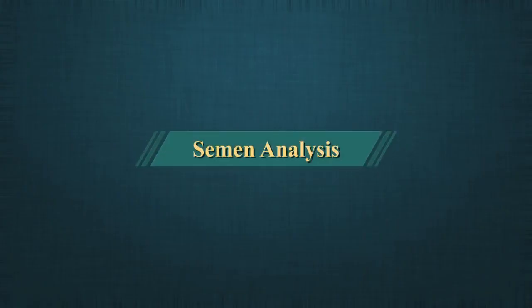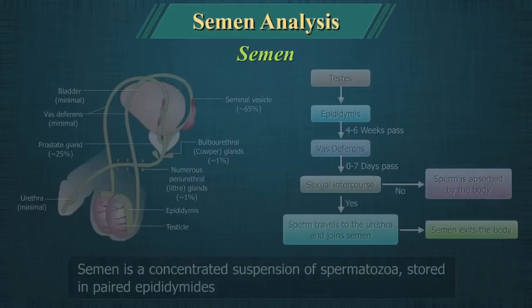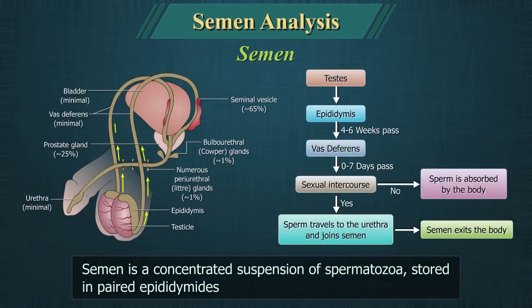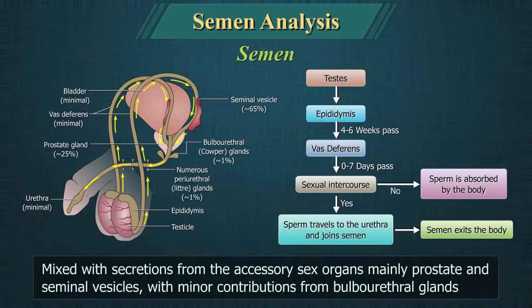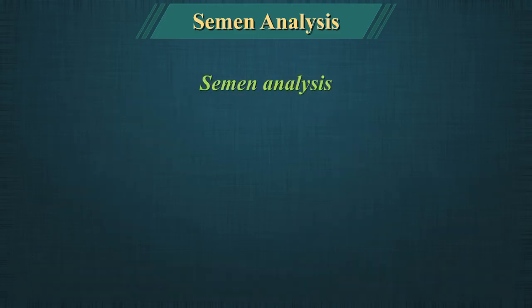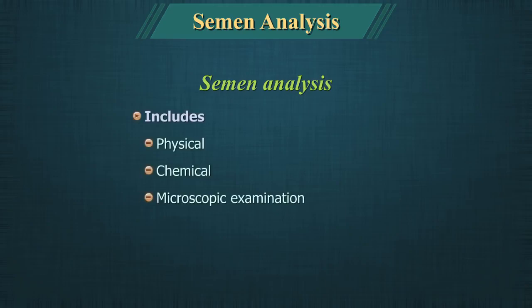Semen Analysis. Semen is a concentrated suspension of spermatozoa produced in the testes, stored in the paired epididymis, mixed with secretions from the accessory sex organs — mainly the prostate and seminal vesicles — with minor contribution from the bulbourethral glands. Semen analysis is the physical, chemical and microscopic examination of semen.